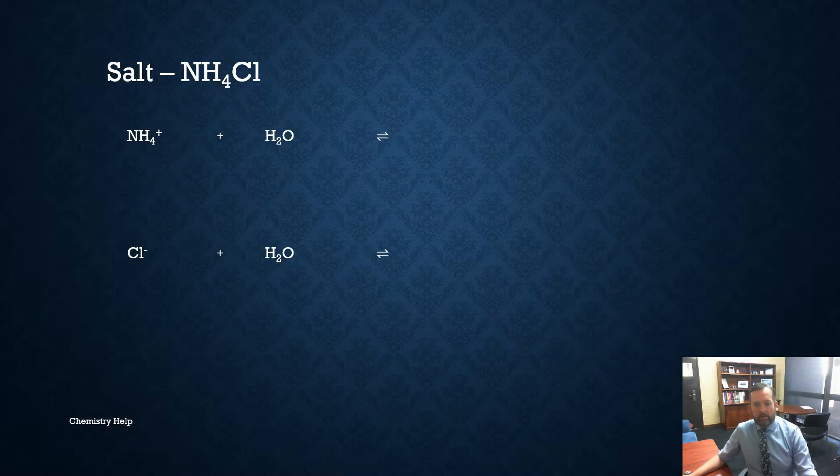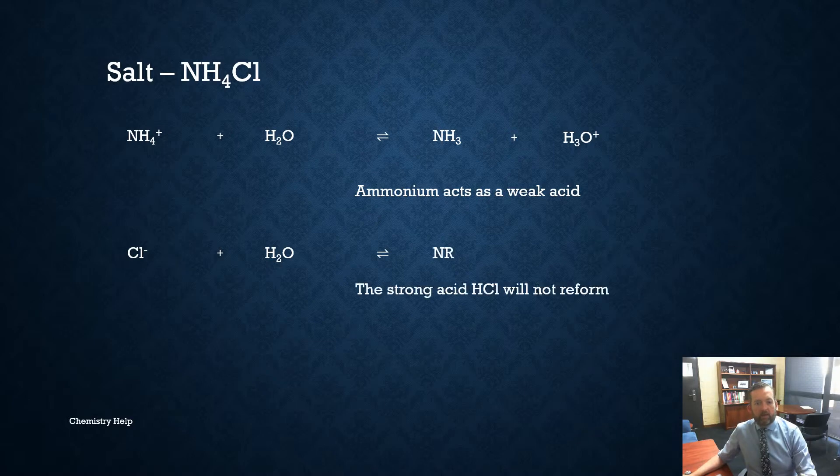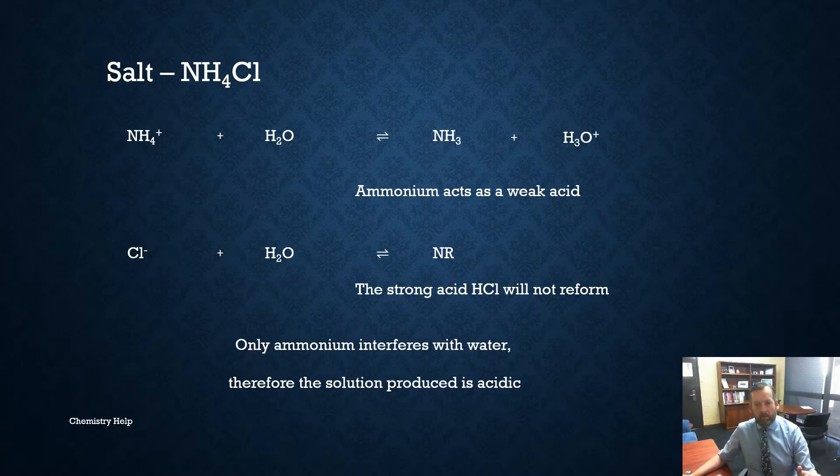Now ammonium will donate a proton to the water and act as a weak acid. So the ammonium acts as a weak acid forming hydronium ions and ammonia. The chloride will not accept the hydrogen back to form the strong acid. So one of the ions interfered with water, the other one didn't. In this case ammonium interferes with water therefore the solution produced will be acidic because you have produced hydronium ions from the salt. So when you take the pH it's less than 7.